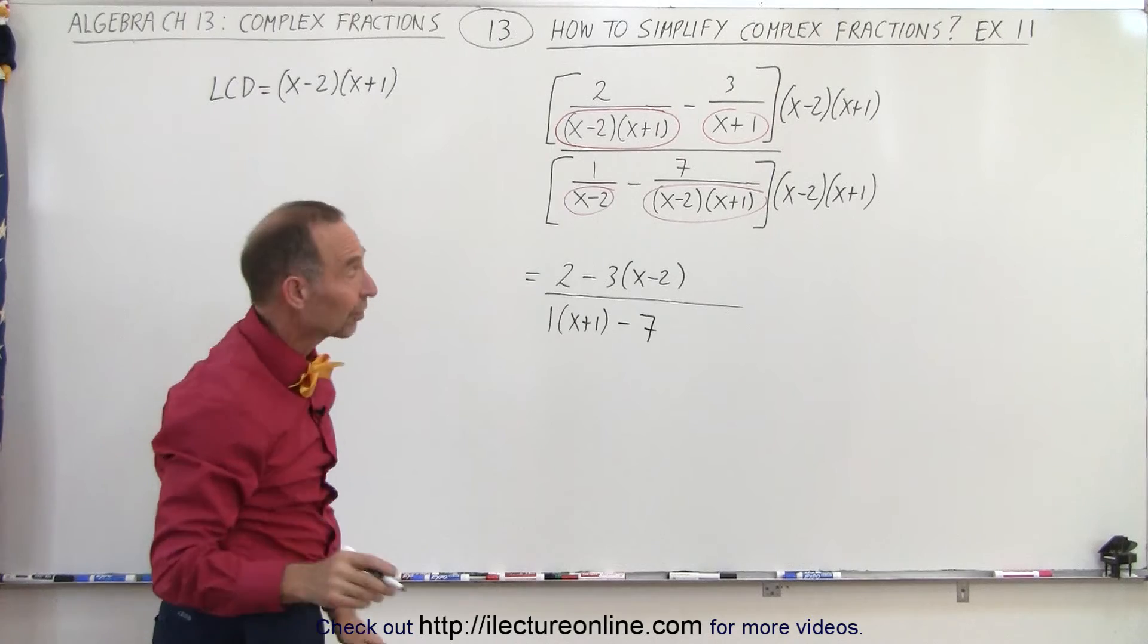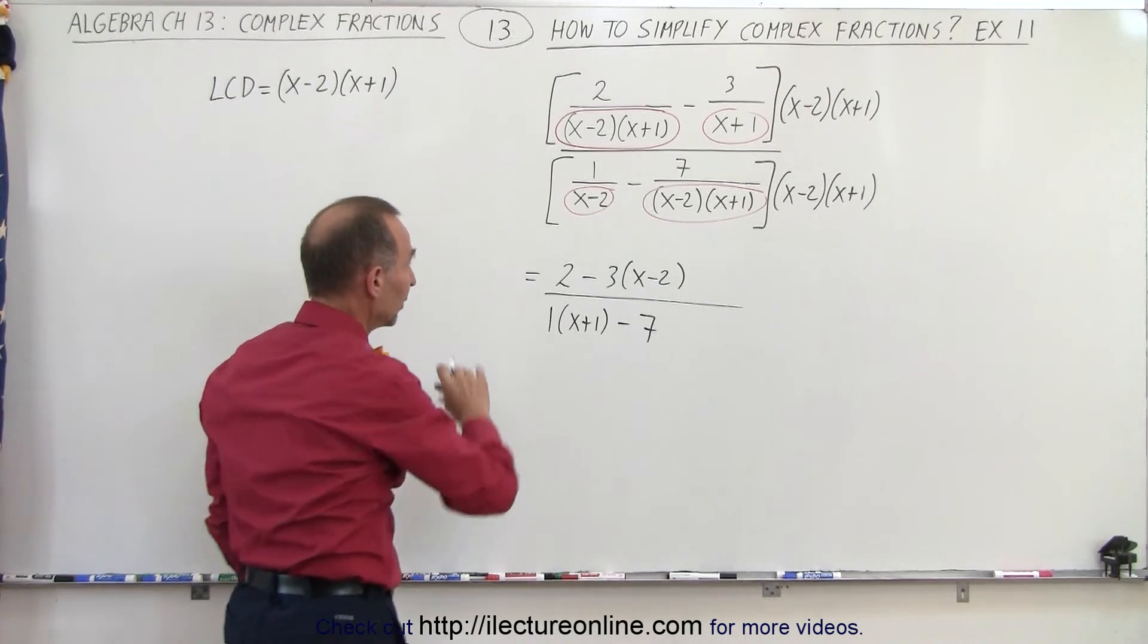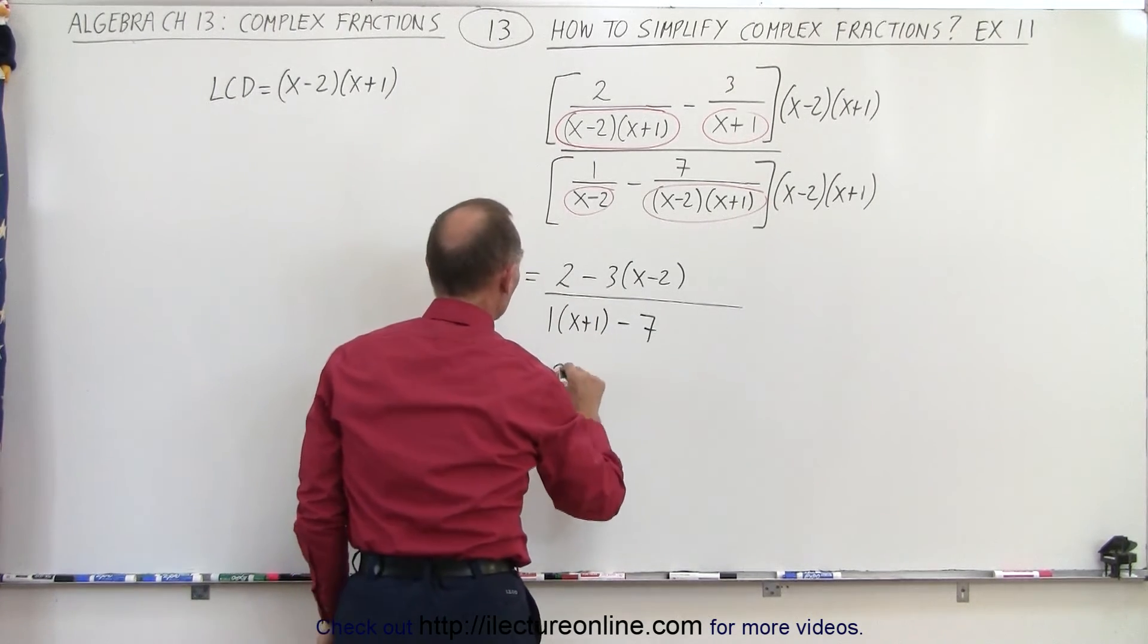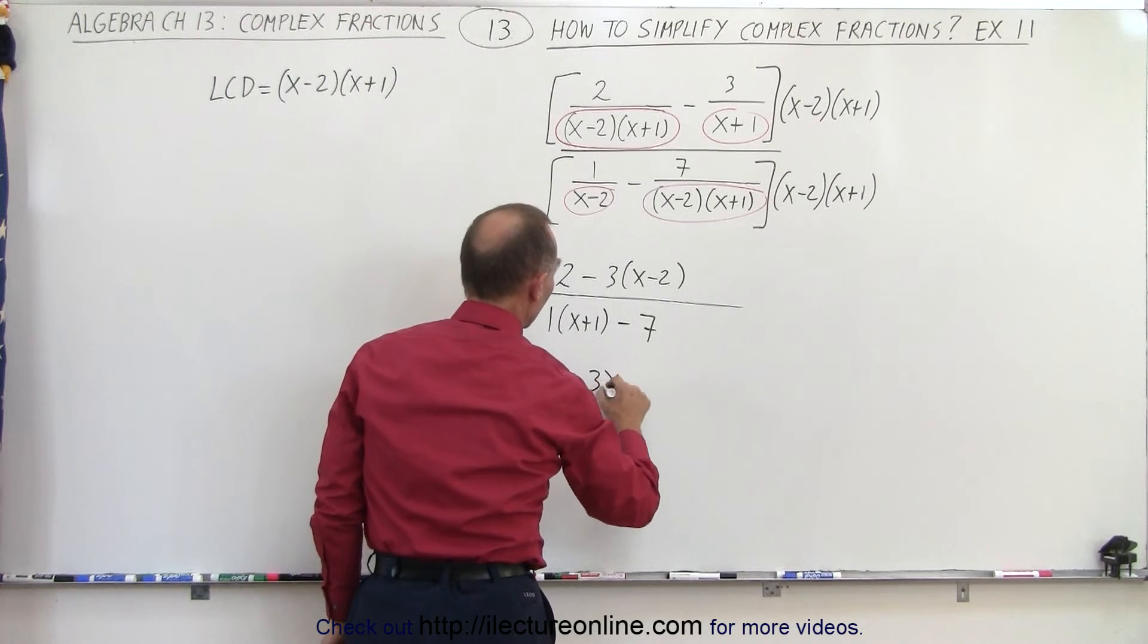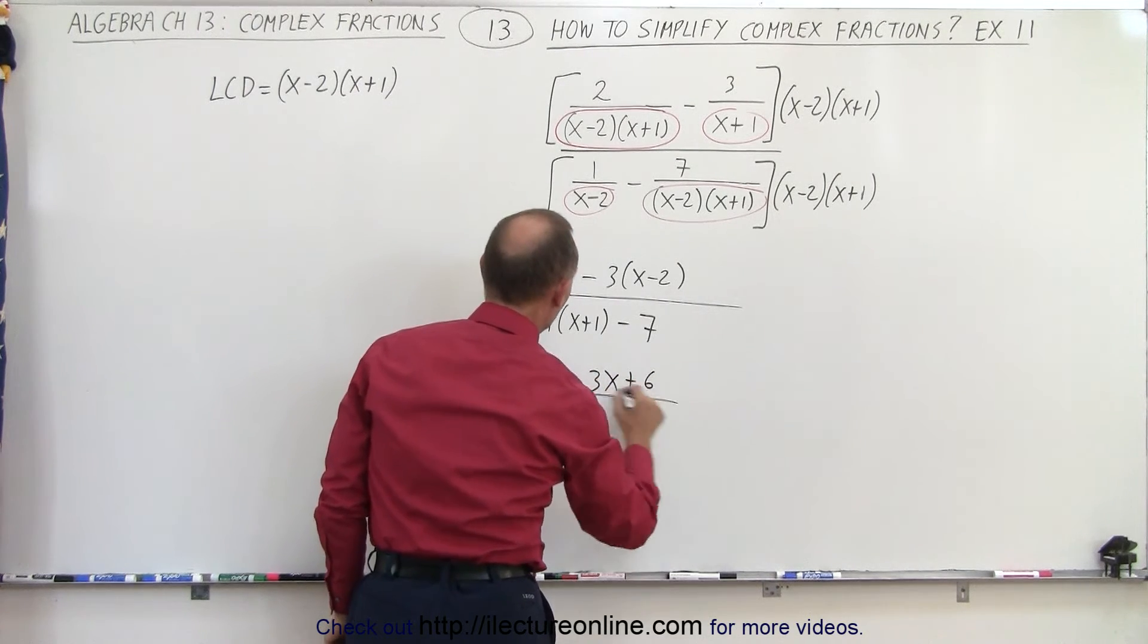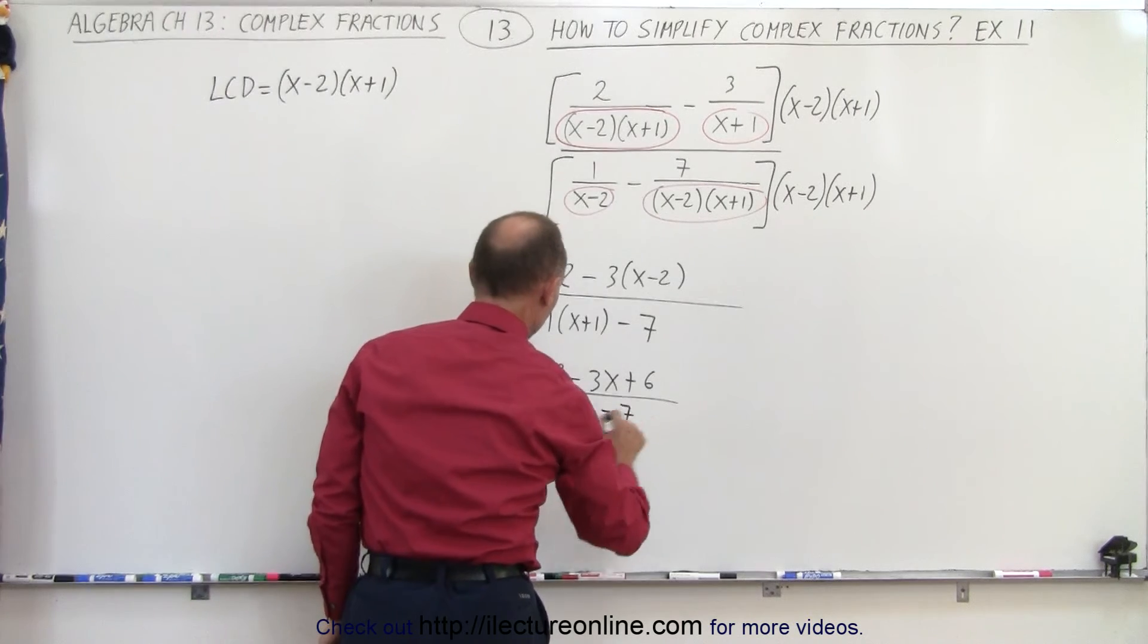All of a sudden, things look a whole lot less complicated. And if we then multiply everything out, we end up with 2 minus 3x plus 6 divided by x plus 1 minus 7.